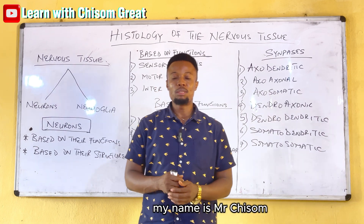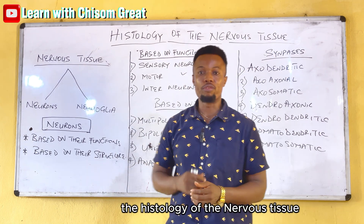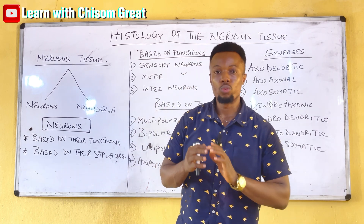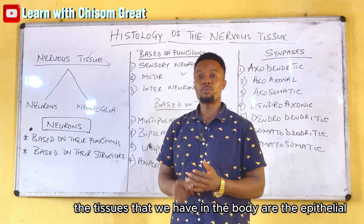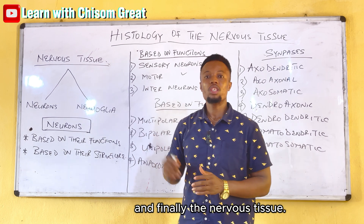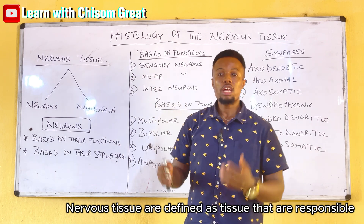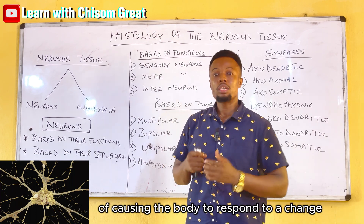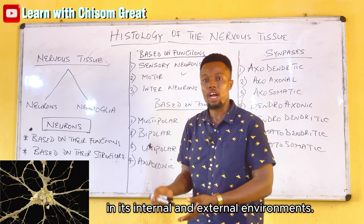Good day everyone. My name is Mr. Chisum and today we'll be looking at the histology of the nervous tissue. Nervous tissue is one of the tissues that we have in the body. Remember the tissues that we have in the body are the epithelial tissue, the connective tissue, the muscle tissue, and finally the nervous tissue. Nervous tissue is defined as tissue that is responsible for causing the body to respond to changes in its internal or external environment.